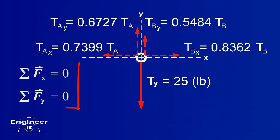It looks like six unknowns, but the equilibrium equations take care of this. Make sure that the components have the correct signs.